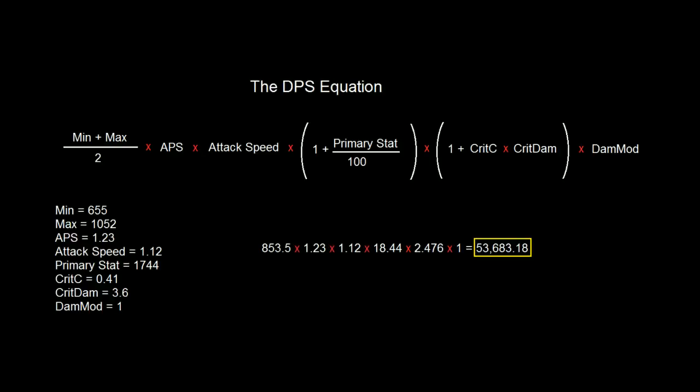So these are my numbers here. This is the number, my minimum damage per swing plus the Skull Grasp, maximum plus the Skull Grasp, and these are all my other stats. This is my average damage per swing, corresponds to this, 1.23 attacks per second, 12% Attack Speed raises 1.12, this is 112%.